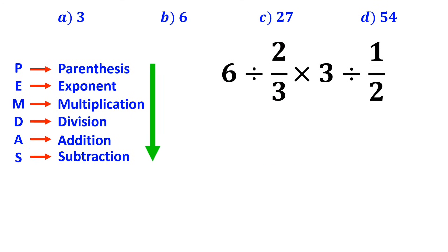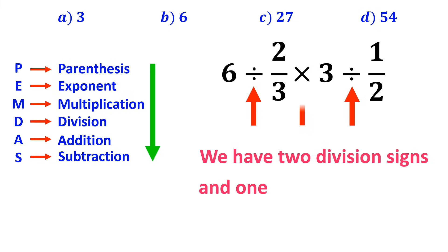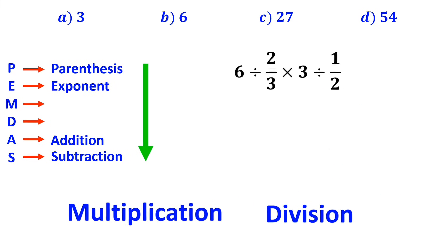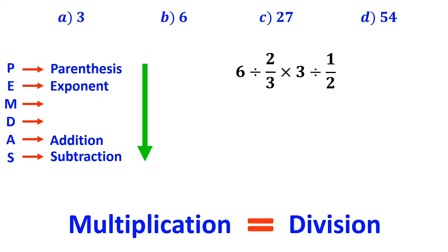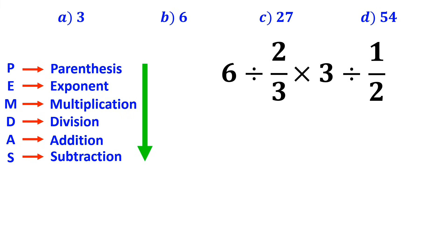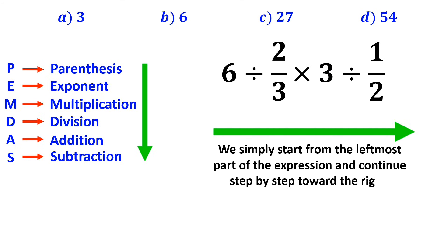All right, as you can see on the screen, in this expression, we have two division signs and one multiplication sign. It's very important to remember that multiplication and division are on the same level of precedence. So in this case, we simply start from the leftmost part of the expression and continue step by step toward the right.